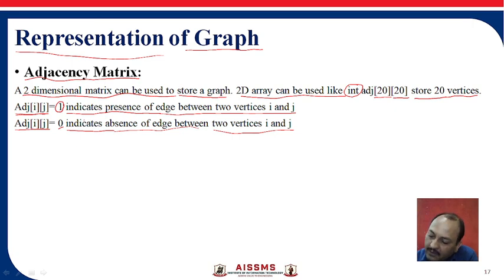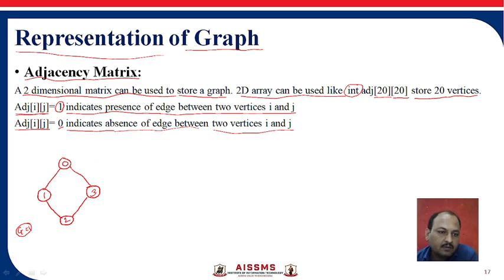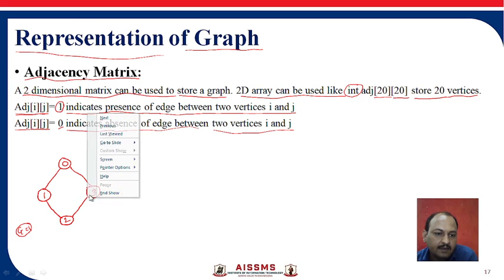Now we will see one graph example. We will consider a graph with vertices: vertex 0, vertex 1, vertex 2, and vertex 3. This is graph 1, G1. One important point about this graph is that there is no direction, so we can say this is an undirected graph.